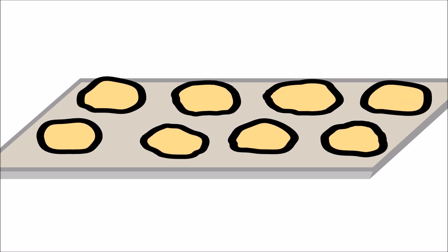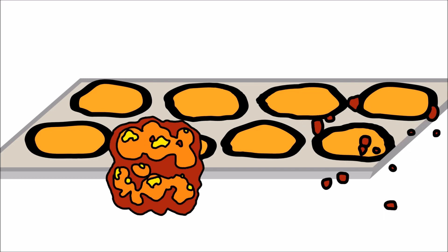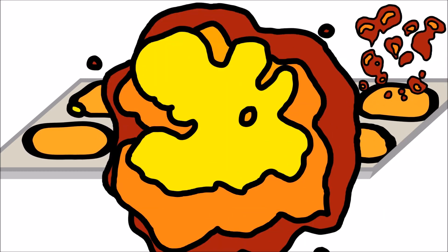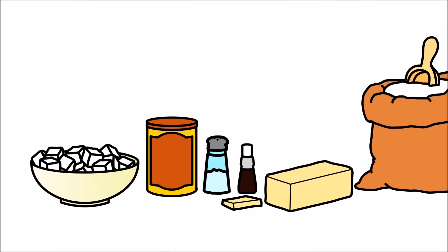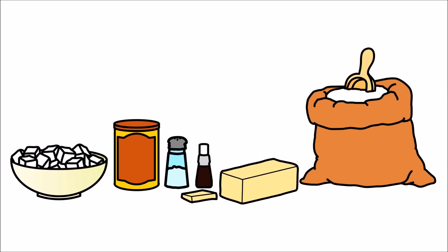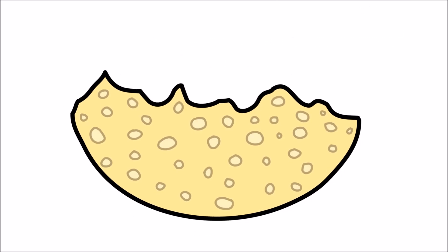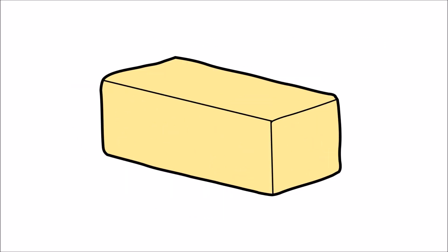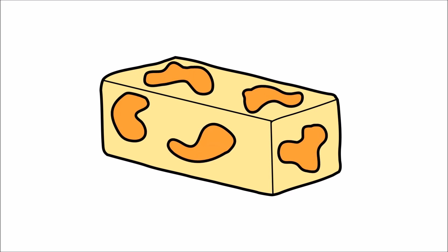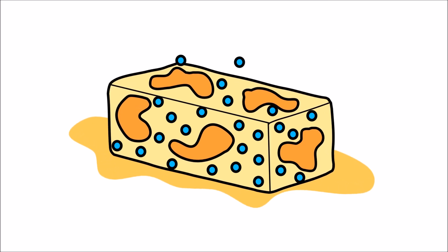The process of baking cookies is actually a series of chemical reactions. Each ingredient has a specific purpose. Beating the butter creates air pockets, which helps make the cookies fluffy. Butter is made up of fat and water, and when butter melts, the water particles evaporate.